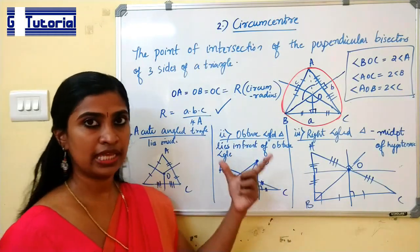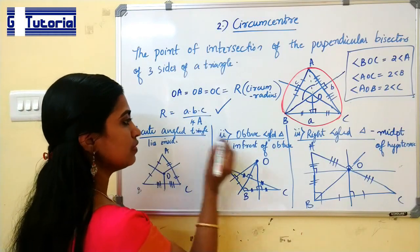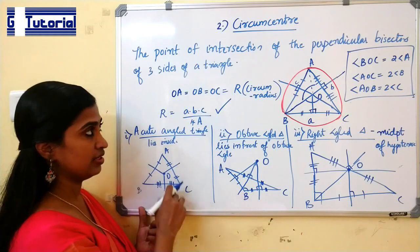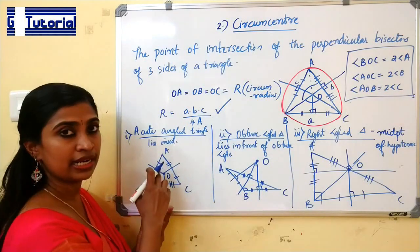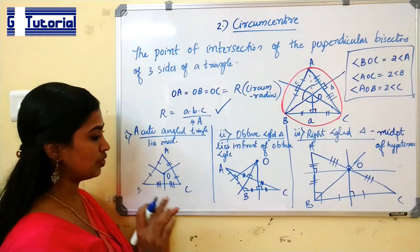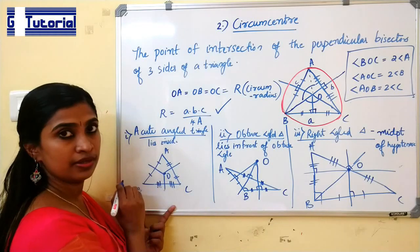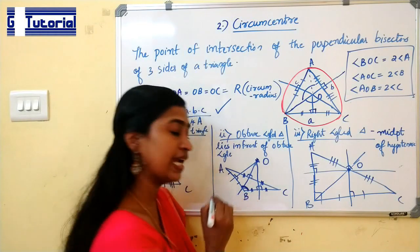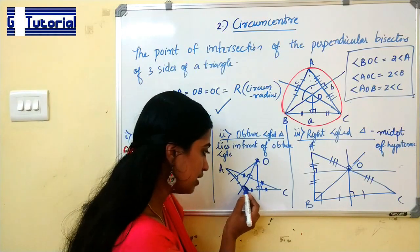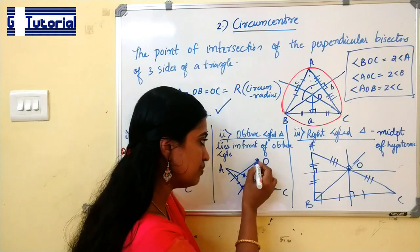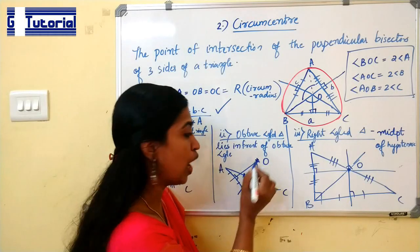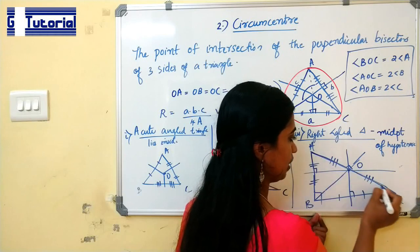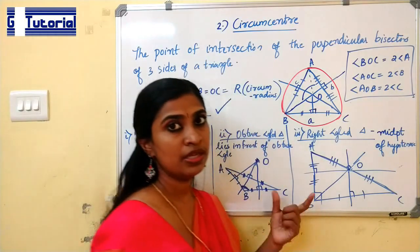There are three main cases regarding the position of the circumcenter. In case of an acute angle triangle, the circumcenter lies inside the triangle — each angle is greater than 0 degrees and less than 90 degrees. In case of an obtuse angle triangle, the circumcenter lies outside the triangle, in front of the obtuse angle. In case of a right angle triangle, the circumcenter always lies at the midpoint of the hypotenuse.